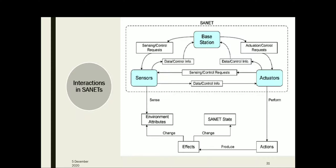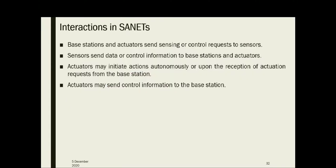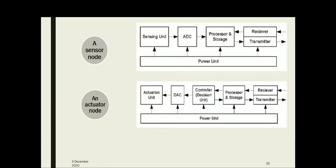This figure shows a block schematic in which various interactions between sensor, base station, and actuators are shown. A sensor node typically consists of a power unit, a microprocessor, storage resources, and a communication module — meaning a transmitter and receiver. It also includes one or more sensing units and an analog-to-digital converter (ADC). The ADC converts analog data collected by the sensing unit into digital data, which is then analyzed by a processor and possibly transmitted to the base station or other nodes.